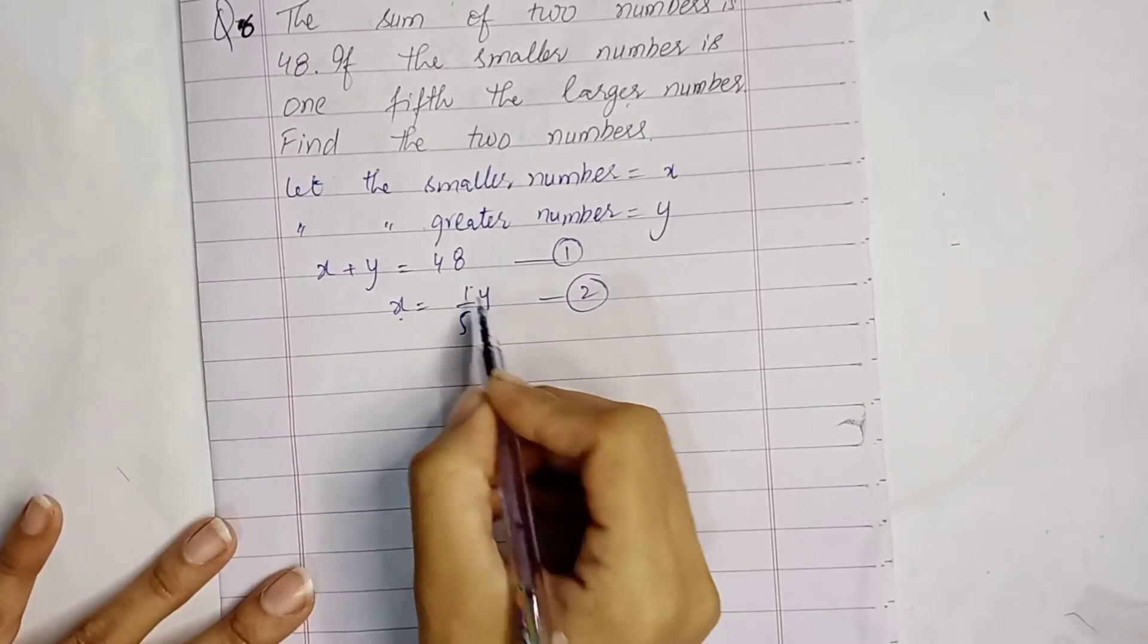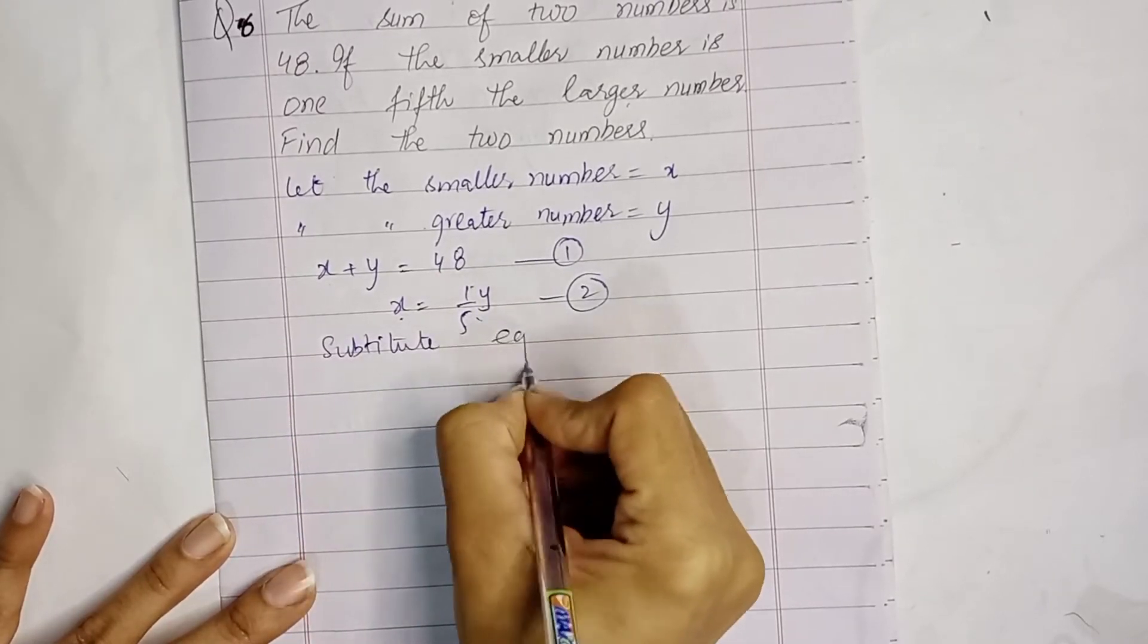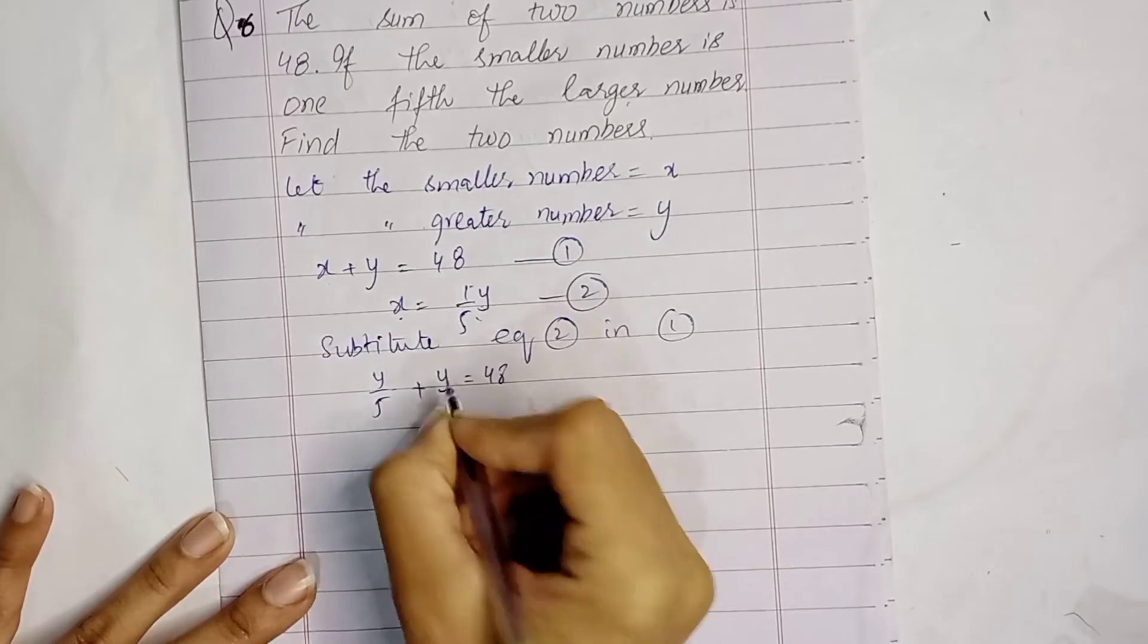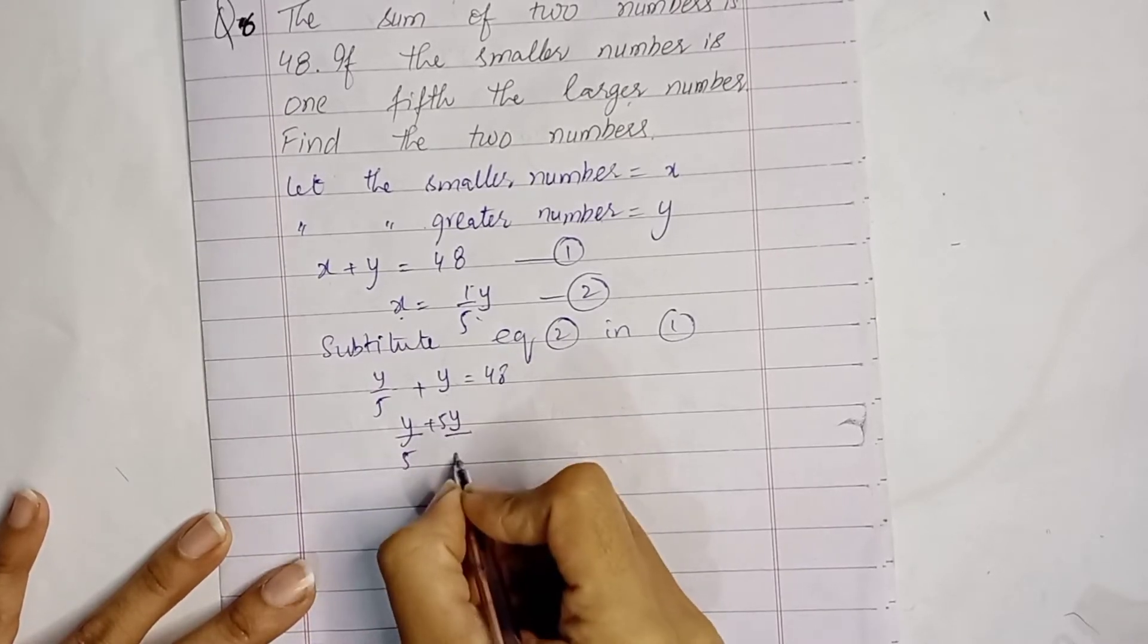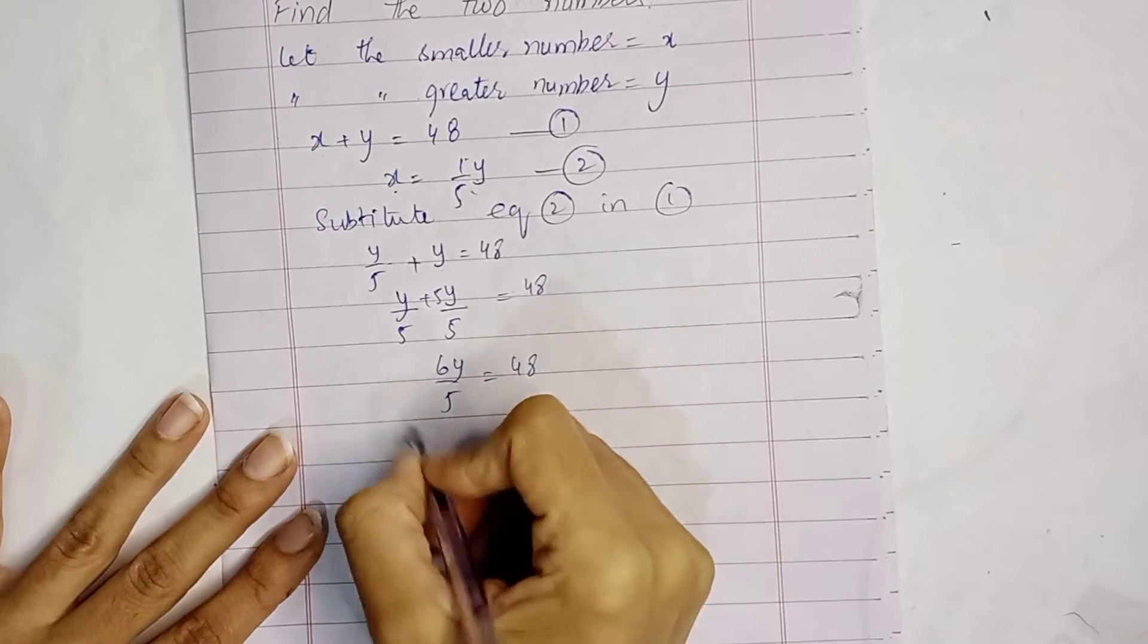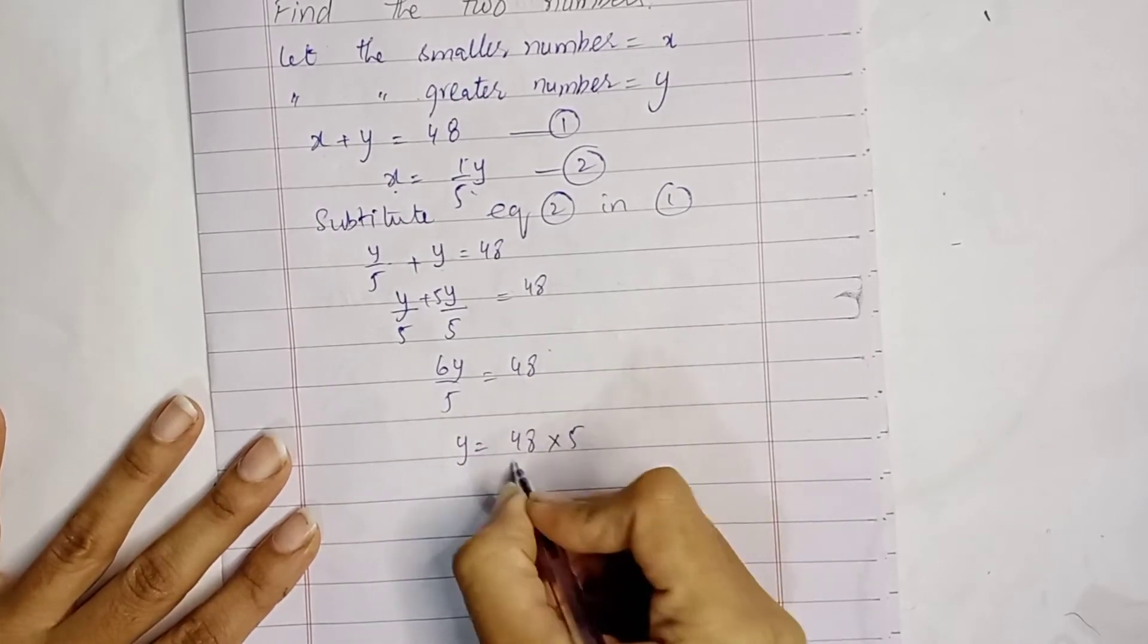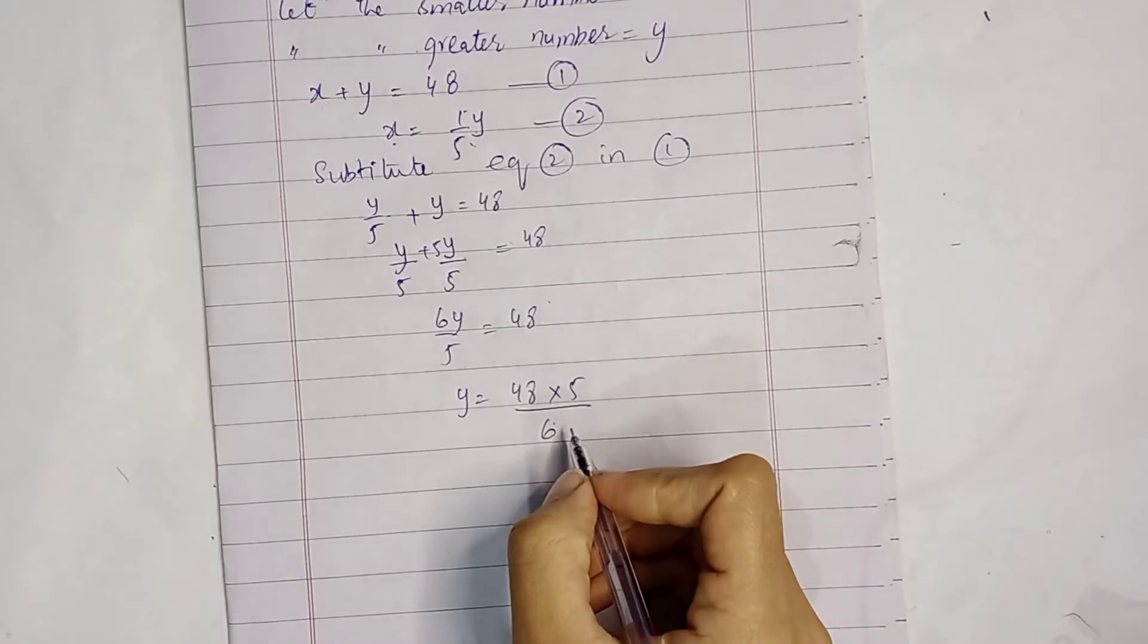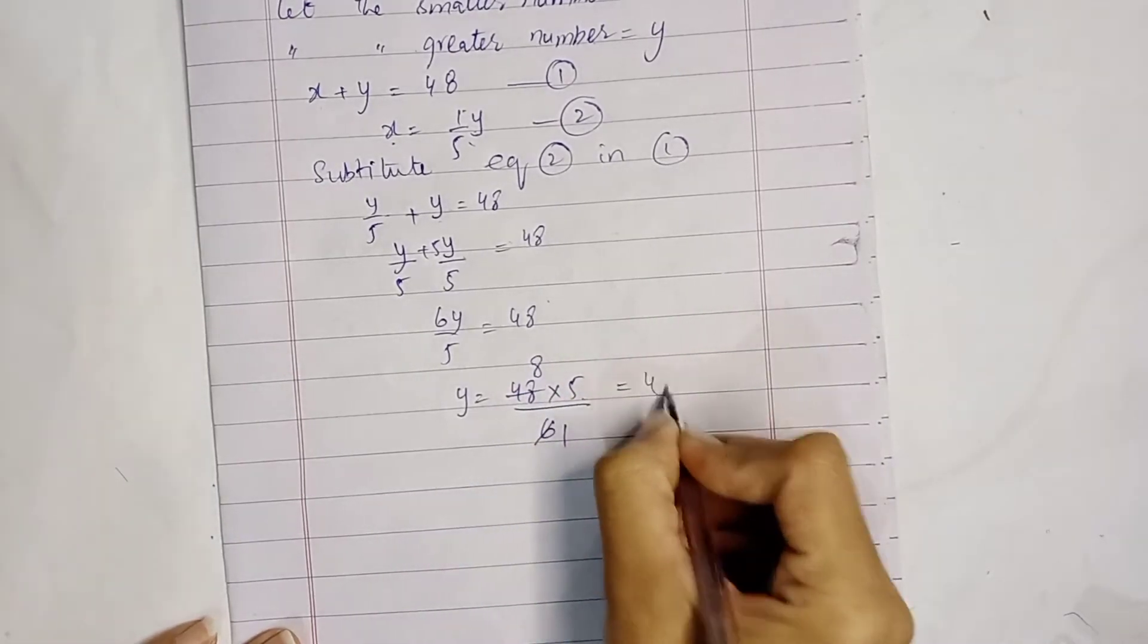Substitute equation 2 into equation 1. y by 5 plus y equals 48. With common denominator: y plus 5y over 5 equals 48. 6y equals 48 times 5. Cross multiply and divide.